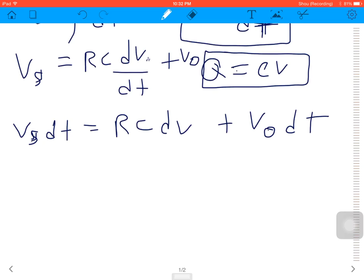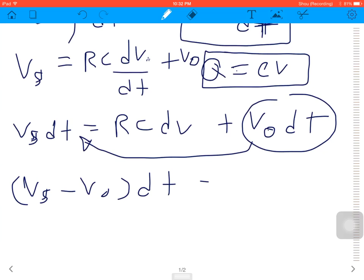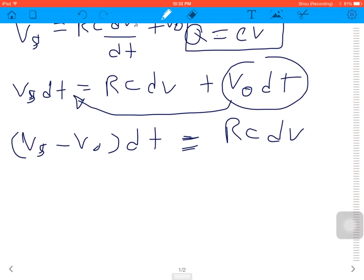And next, I use this term—I move this term to this side. Now we got VS minus V out dt equals RC dV like this. And now dt divided by RC equals dV divided by VS minus V out.